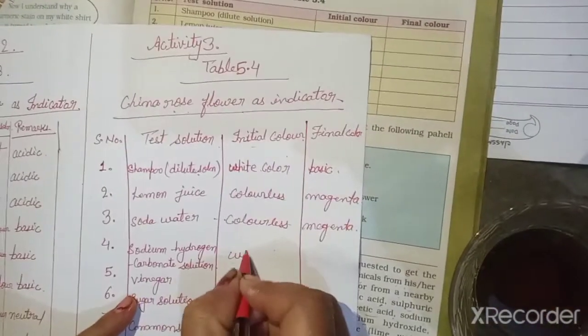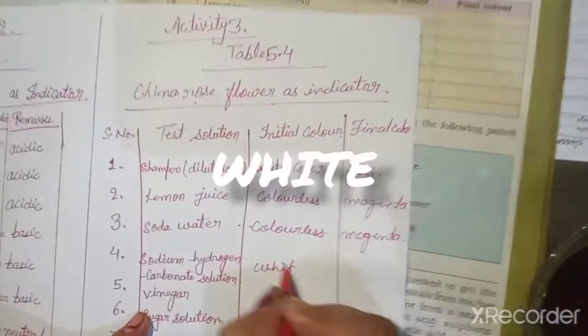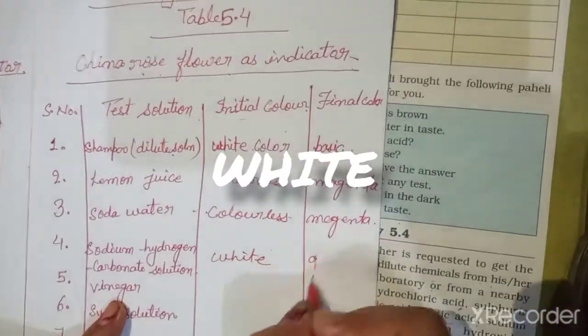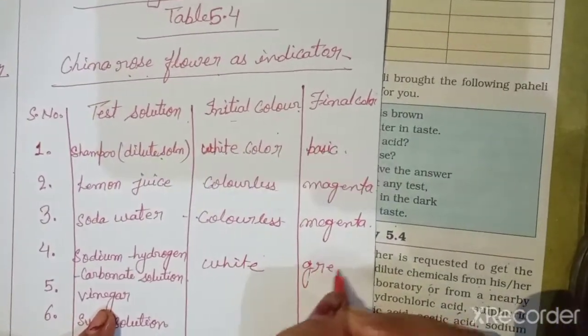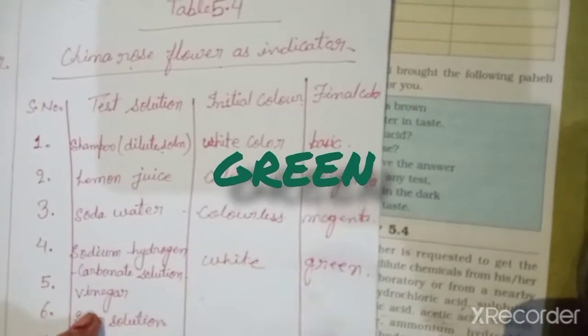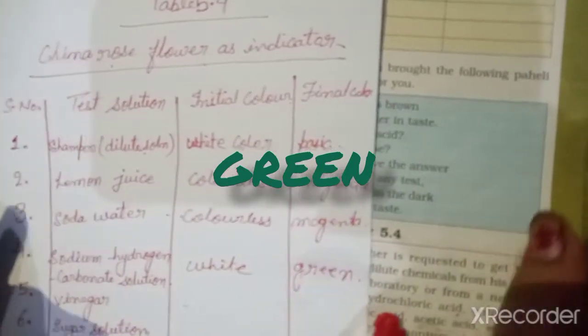The initial color is white and the final color is green. Next is vinegar.